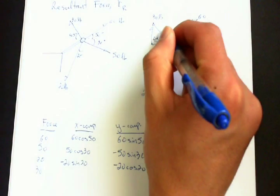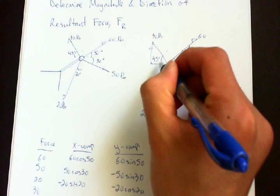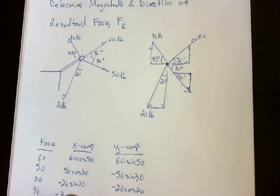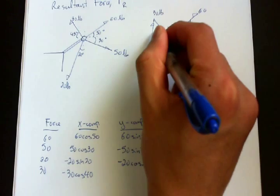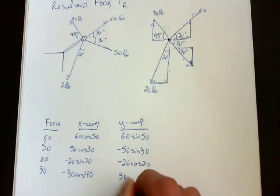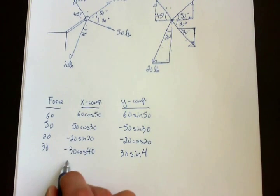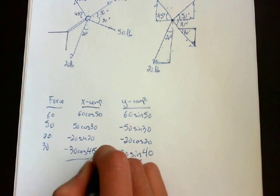And for this force, its x-component is adjacent over hypotenuse. And again, it's negative because it's going to the left. So it's negative 30 cosine 40. And its y-component is opposite over hypotenuse. So it's 30 sine 40. Excuse me, 45. 45.